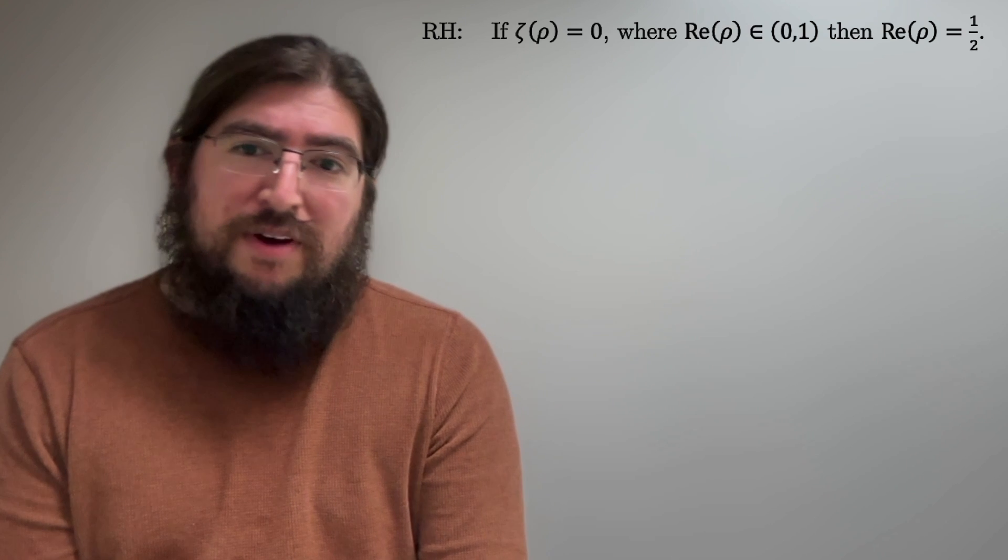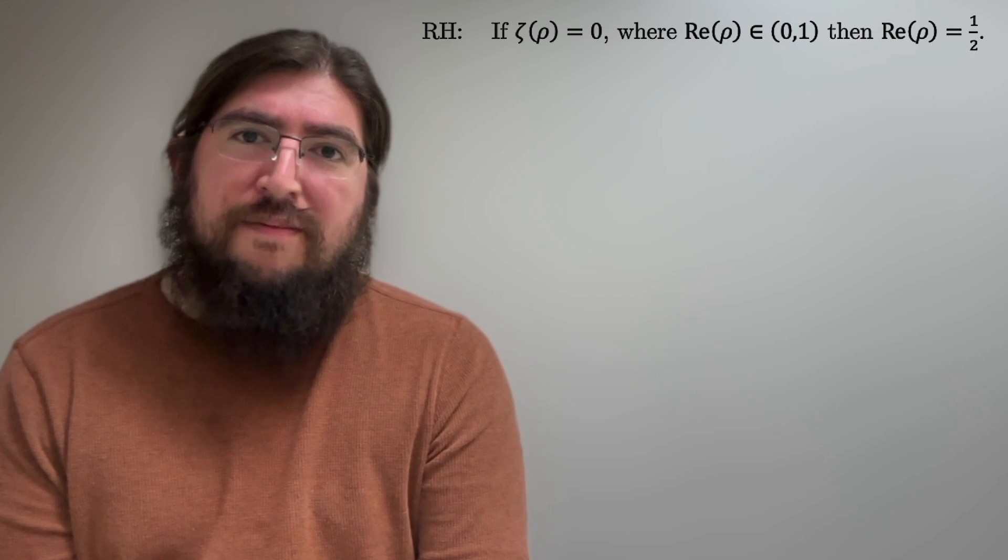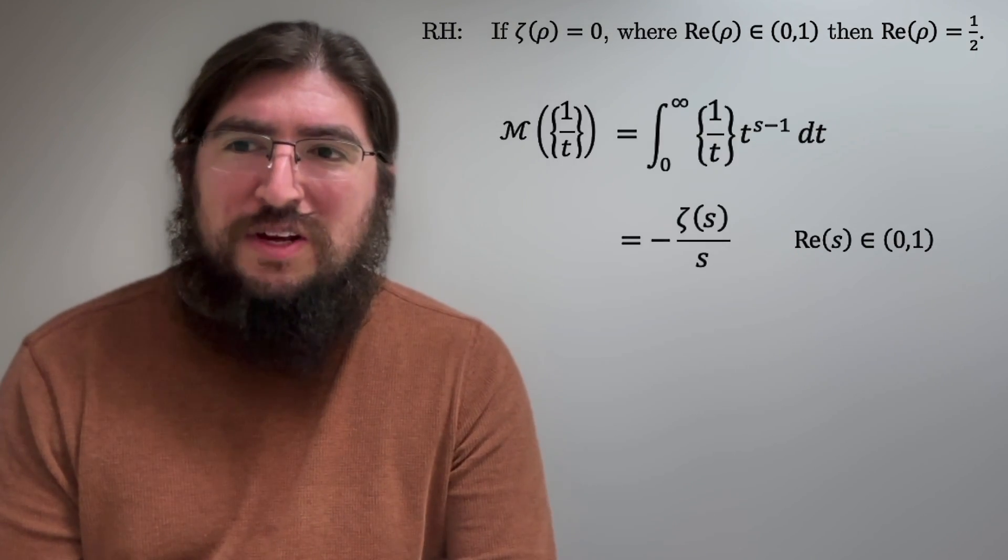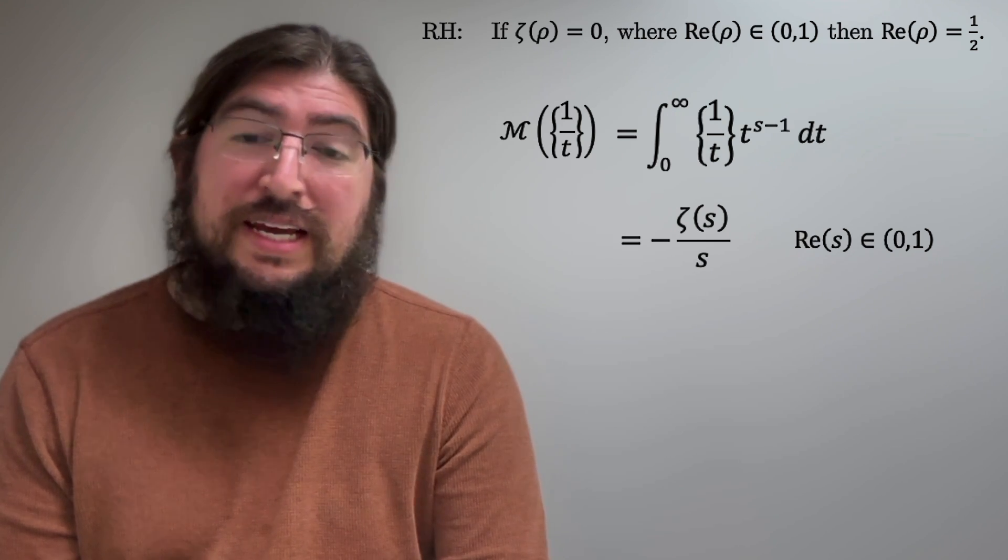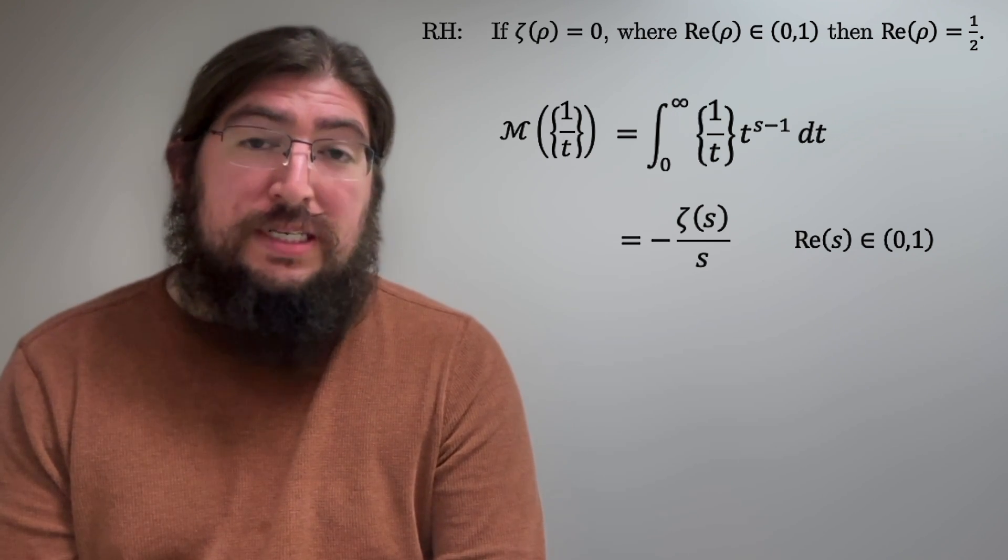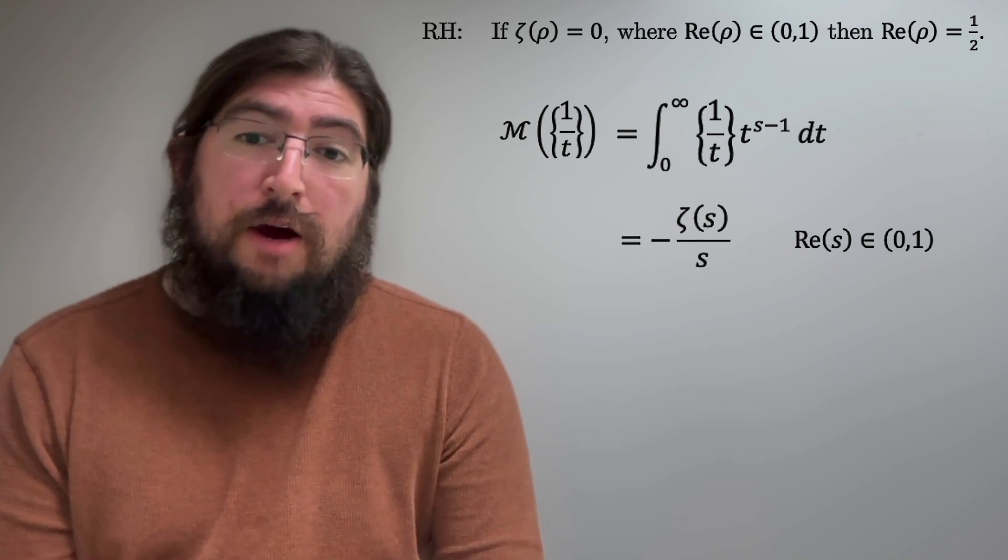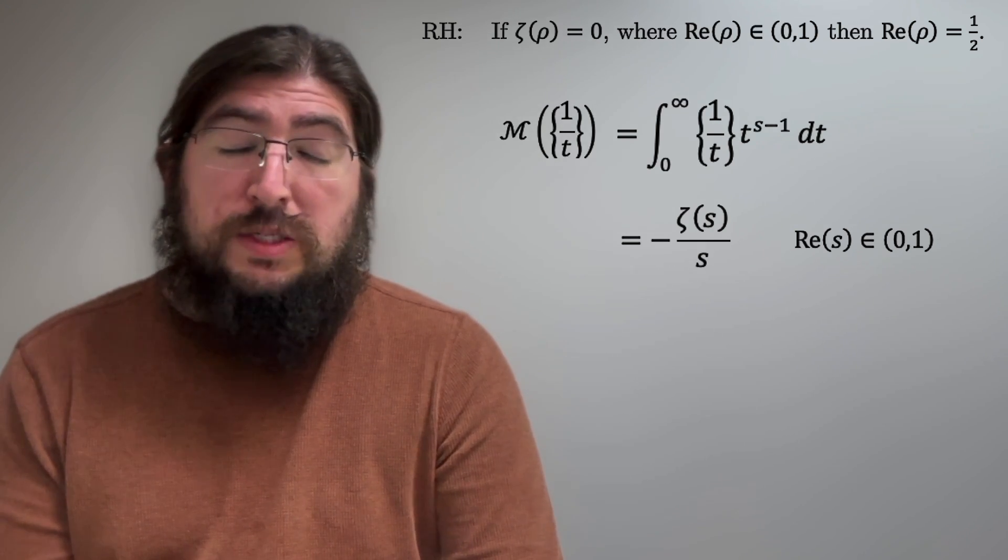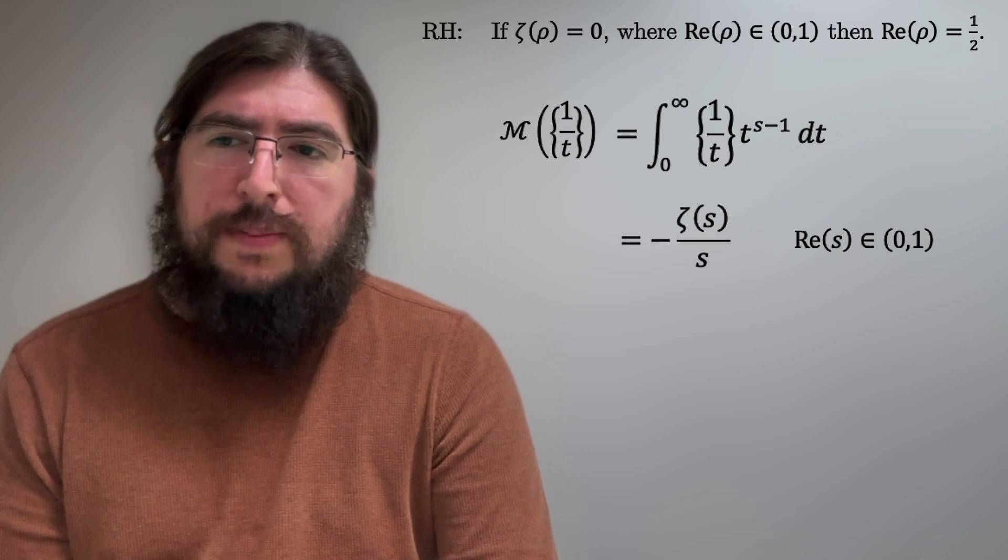Now, if you're not familiar with the Riemann zeta function, I talk about it extensively in a lot of previous videos, and we have a nice result here that I proved to you in previous videos saying that the Mellin transform of the fractional part of 1 over t has to do with the Riemann zeta function. It's negative zeta over s. Really, it's equal to this integral, which is nice, and this is valid when the real part of s is in between 0 and 1, so this is actually of interest to us for the Riemann hypothesis.